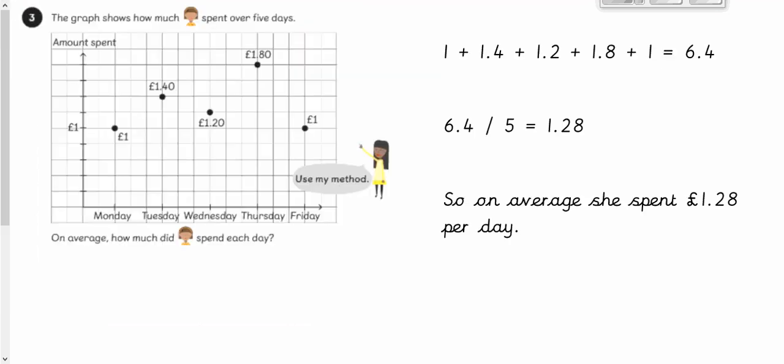Moving on from that. We've got a graph showing how much this girl spent over five days. So five days is important. There's five bits of data. So five amounts spent. Do exactly the same thing. We add up all the amounts spent, all the data we've got. So one, add 1.4, add 1.2, add 1.8, add 1 is 6.4. Then we divide through by how many days we have. So 6.4 divided by 5 equals 1.28. So on average, you spent £1.28 per day. What we did was add them up, divide through by the number of days, and then we're golden. We're there. So nothing too tricky. Just add up all your data and divide through by the total number of bits of data that you've got.